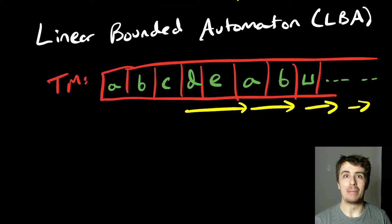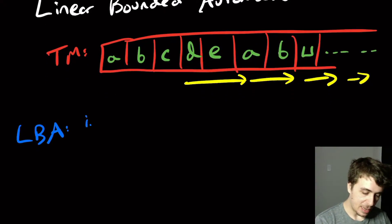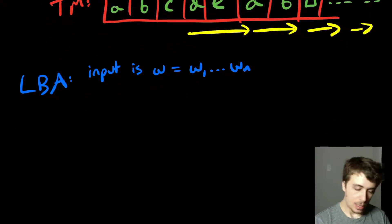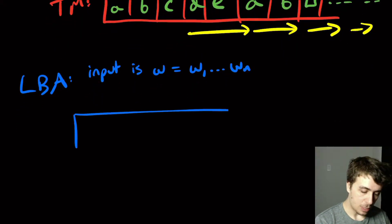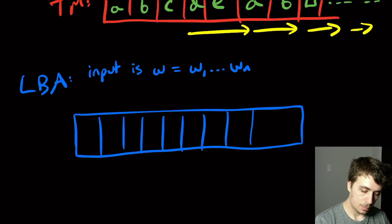There is a bounded amount of space for an LBA. So how does an LBA work? Well, let's say that the input to the machine is W, which I'm going to call all the characters W1 up to Wn. And what we're going to do is we're going to have a tape which has exactly those characters on it.